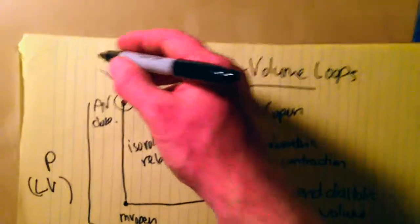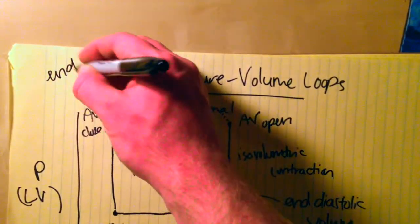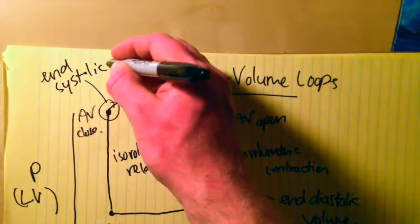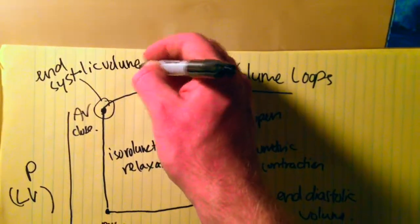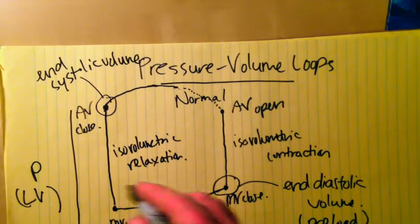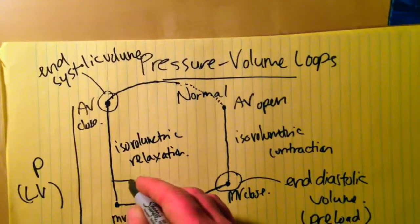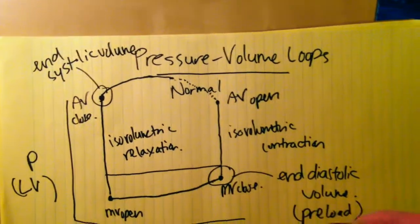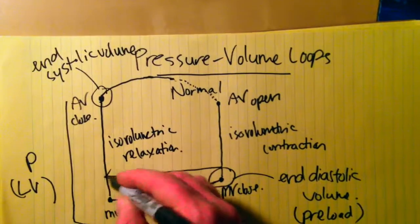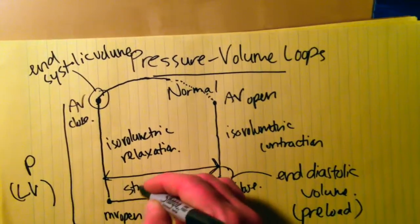And this corner up here is the volume in the left ventricle at the end of systole, after the contraction is done and relaxation starts. So this is your end systolic volume, which gives you an important number. The difference between these two, the end diastolic volume and the end systolic volume, is going to be your stroke volume.